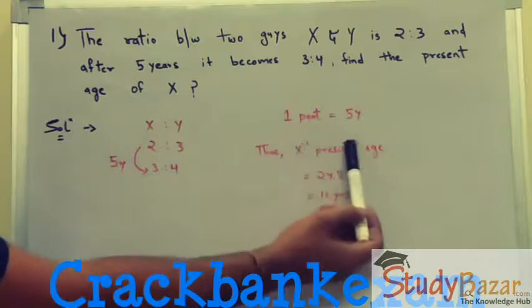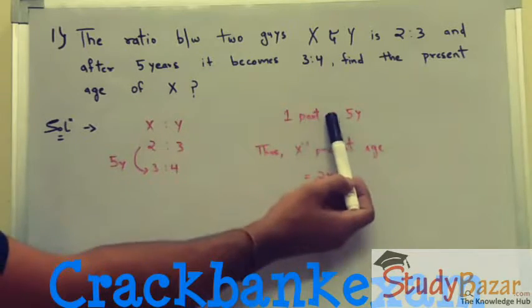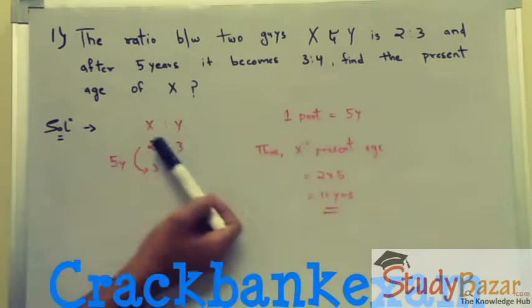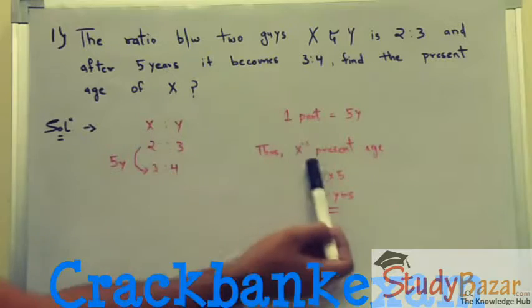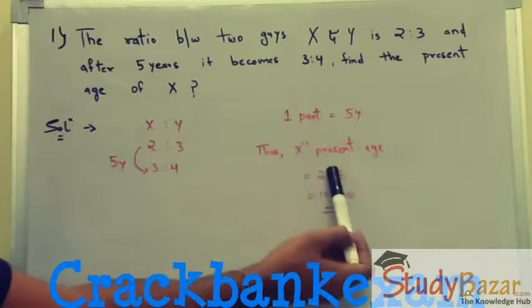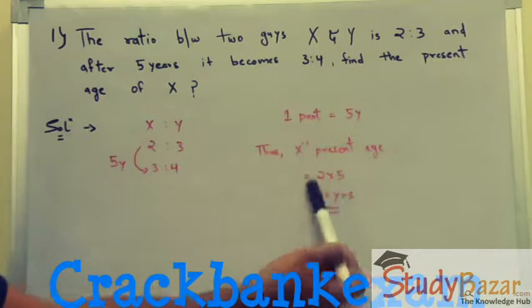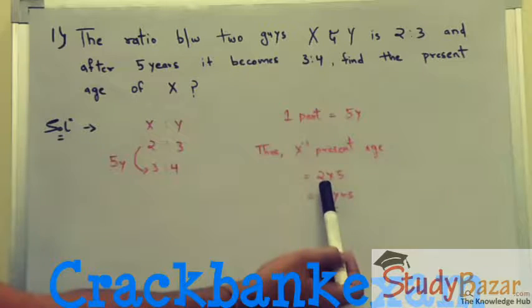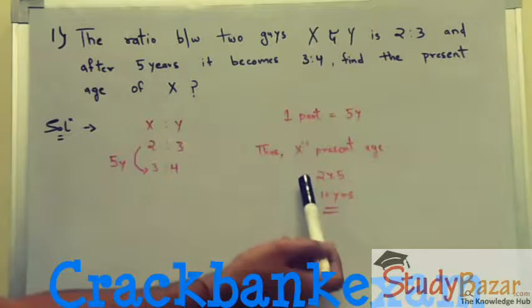Since one part is equivalent to five years, to find the present age we multiply the one-part value by the initial ratio of X, which is 2. So 2 into 5 equals 10 years. This will be the present age of X.